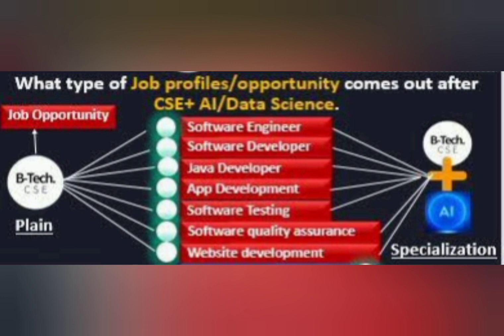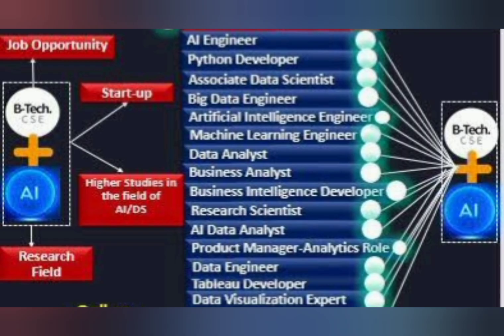The core BTech CSC branch on the left is the original branch. Software engineers from core CSC were traditionally getting jobs as software engineers, software developers, Java developers, and app developers. Now, with the arrival of AI, ML, and DS specializations, more roles and designations have been created. The specialization branch is BTech plus any combination — AI, ML, or data sciences — within computer science.